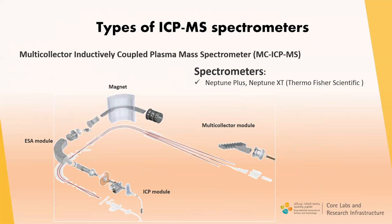The mass analyzer of the multi-collector ICP-MS spectrometer is also a double-focusing magnetic sector, but based on direct Nier-Johnson geometry — where the magnetic field is behind the electrostatic analyzer. In addition, a conventional detector is replaced by a multi-collector module, which allows simultaneous detection of elements. This type of spectrometer includes all the advantages of high-resolution ICP-MS, plus it extremely improves accuracy and precision of isotope ratio determination and decreases the time of analysis.